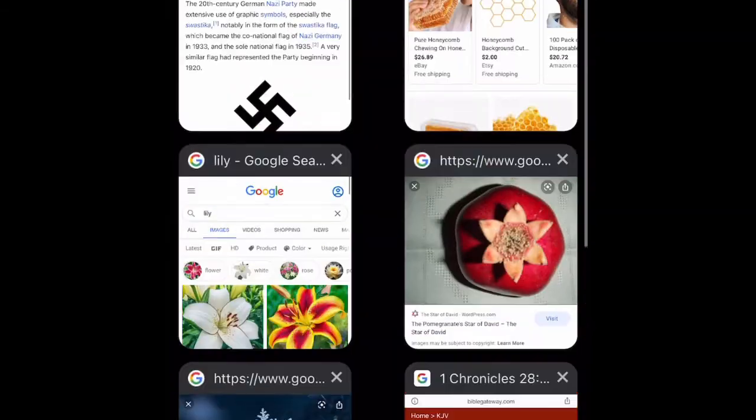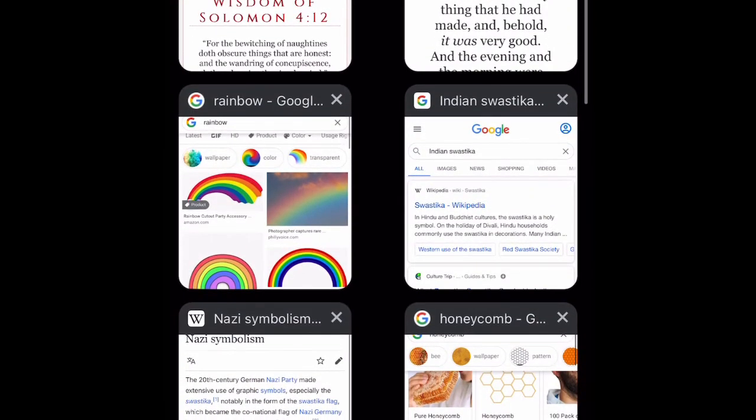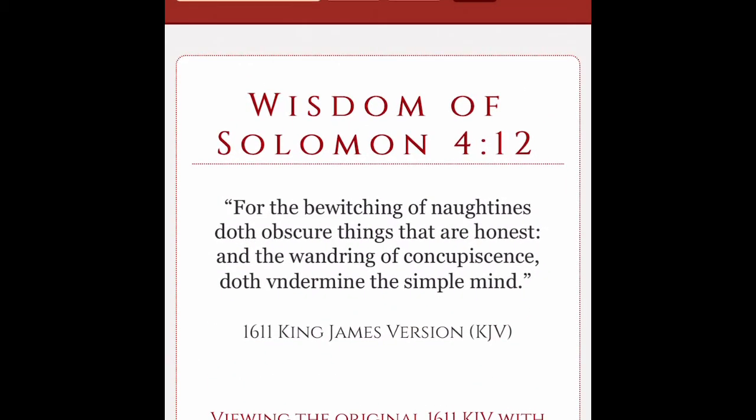When you go into the Wisdom of Solomon, verse 4 and 12, it says: 'For the bewitching of naughtiness doth obscure things that are honest, and the wandering of concupiscence doth undermine a simple mind.' So basically, they take innocent things that are not evil and turn them into something else.